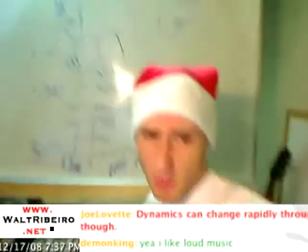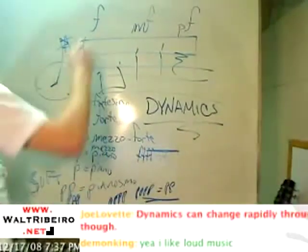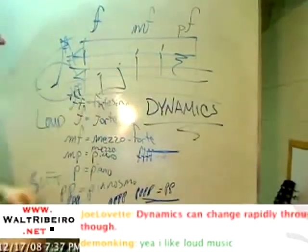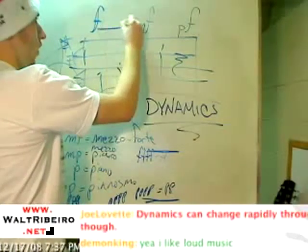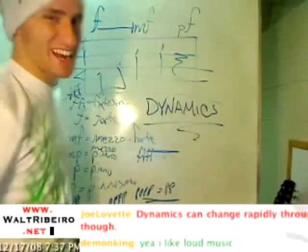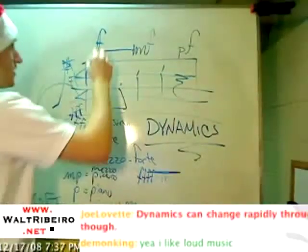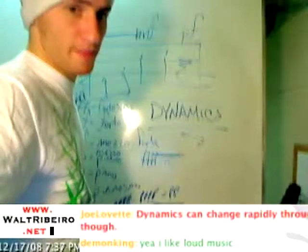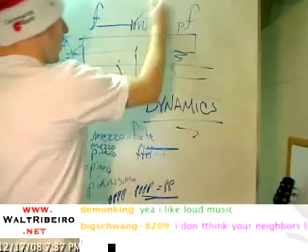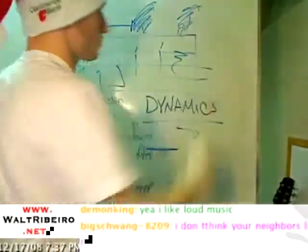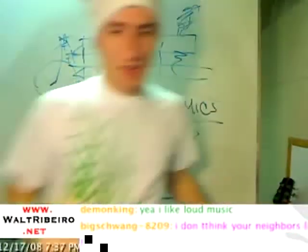Let's say we write a piece of music and I put an F here. The way this works is that the F means I want to play this loud all the way through until the next dynamic marking. If there's a dynamic marking that says F and there's no other marking for the rest of the piece, it just means you play loud for the whole piece.